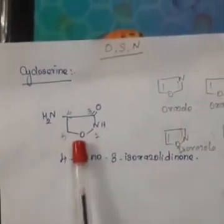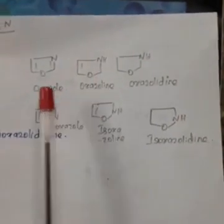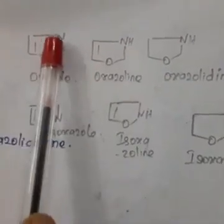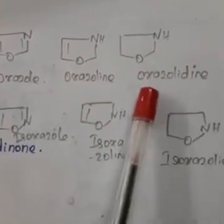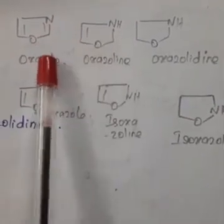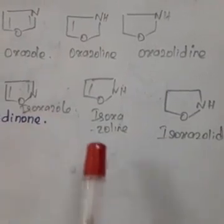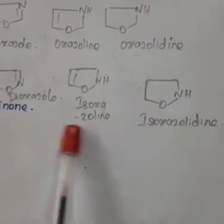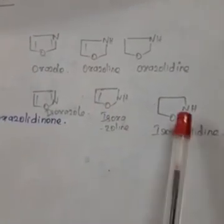The last drug is cycloserine. Its structure is a five-membered ring with oxygen, followed by NH, a carbonyl (C=O), and NH2. To understand its name, we need to know oxazole and isoxazole. Oxazole is a five-membered ring with two heteroatoms — oxygen and nitrogen — at positions one and three. If one double bond is absent, it is oxazoline; if two double bonds are absent, it is oxazolidine. Isoxazole has oxygen and nitrogen at positions one and two.